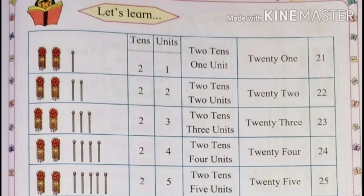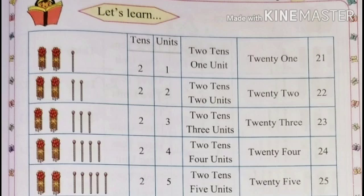Two bunches of math sticks means 20 math sticks. With 2 math sticks: 22. That is 2 tens and 2 units — 22. The spelling of 22 is T-W-E-N-T-Y (20) T-W-O (2): 22.